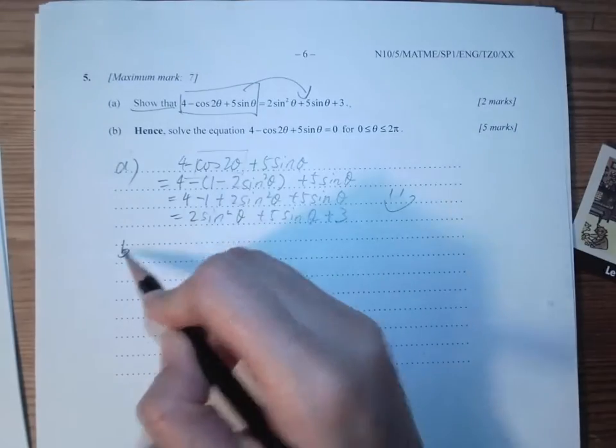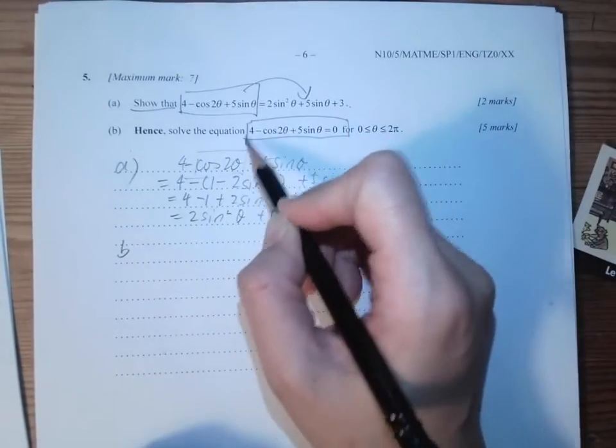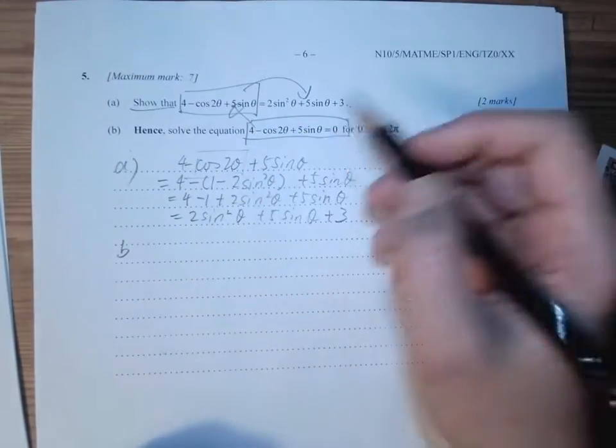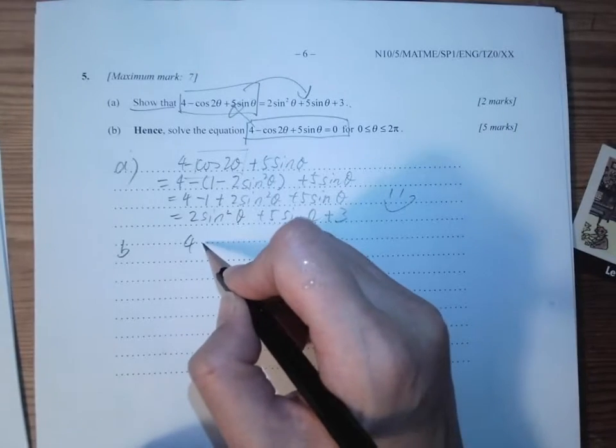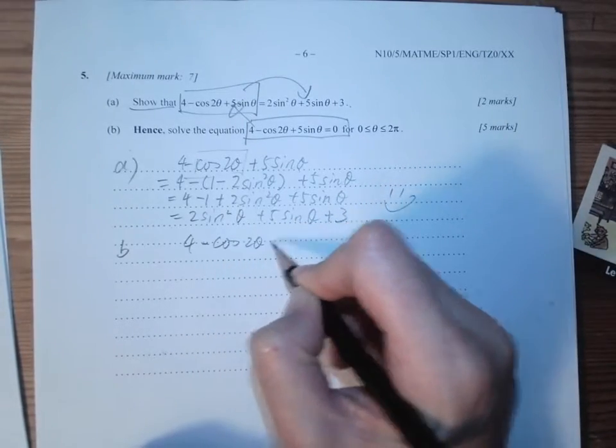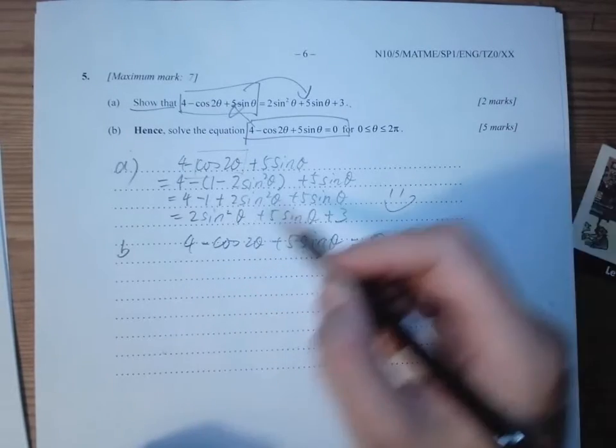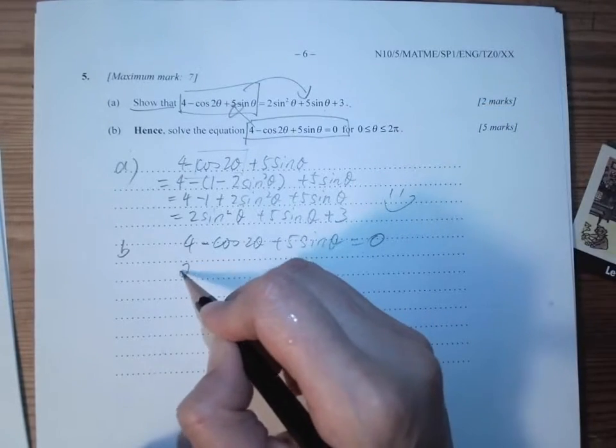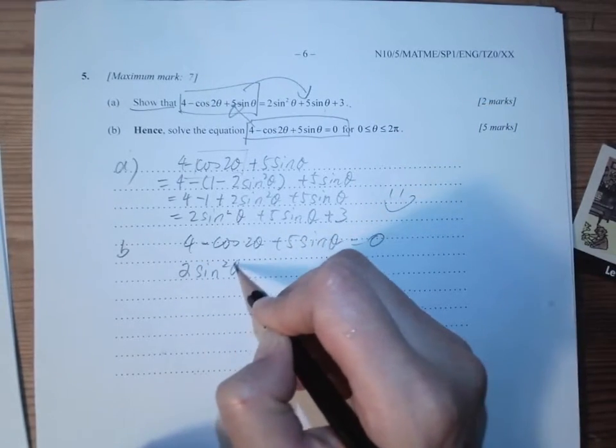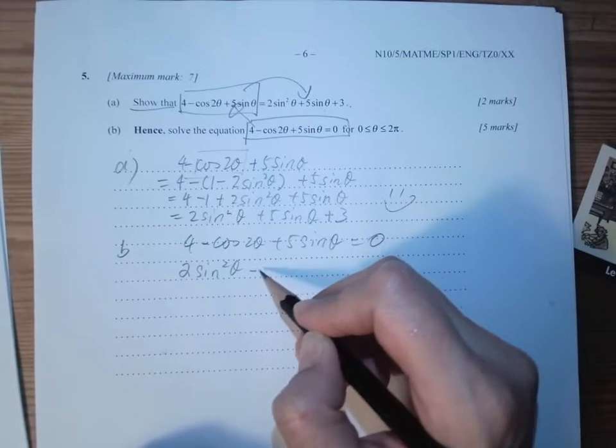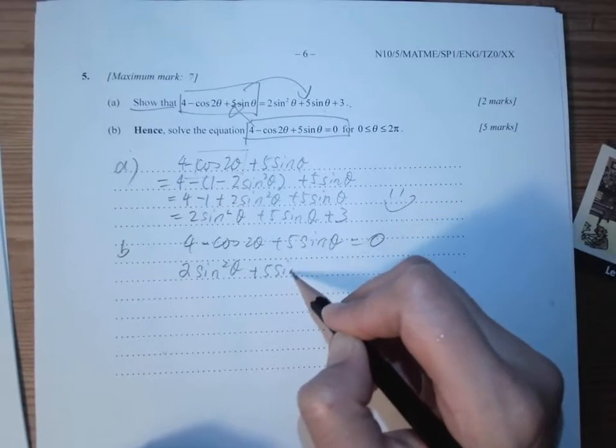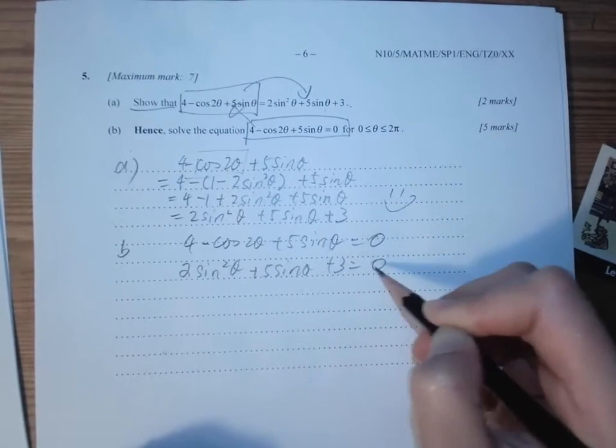So part (b), you need to solve this equals to zero. I'll copy the question first: 4cos²θ - cos2θ + 5sinθ = 0. We have done that at the top, so then we have 2sin²θ + 5sinθ + 3 = 0.